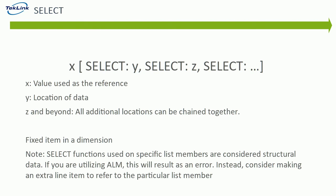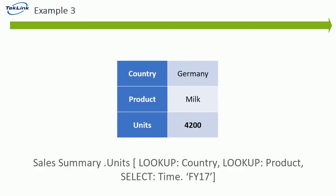Just as a note: select functions that are used on items in a list are considered structural data. If you are utilizing ALM, this will result in an error. A workaround for this is to create an extra line item to refer to that particular member directly, and then have the function refer to that line item instead of directly to the list member. As you can see, our end result will look the same, but will have the added SELECT function at the end, so it will only look at values from 2017 and ignore all other time periods.